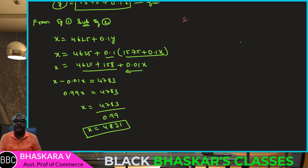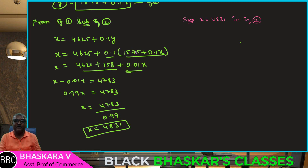Substitute X equals 4,831 into equation number 2: Y equals 1,575 plus 0.1 into X.